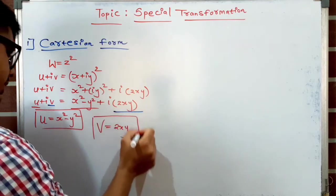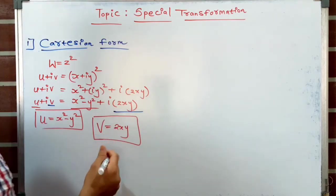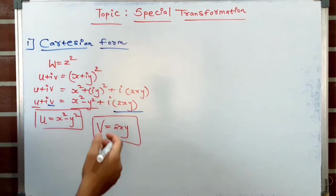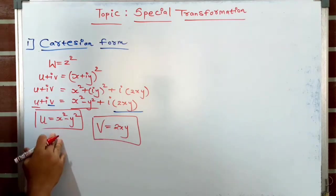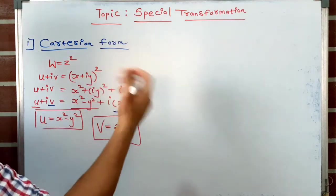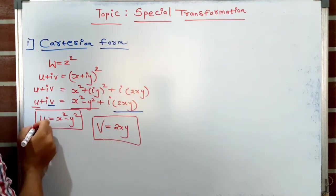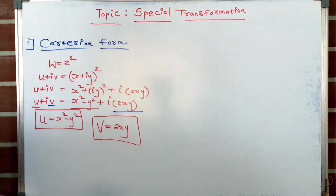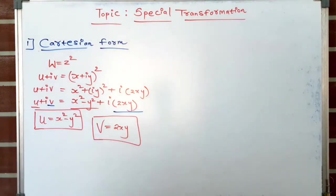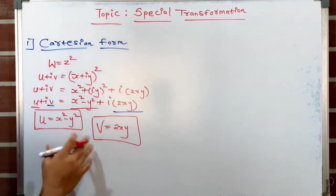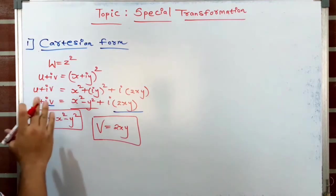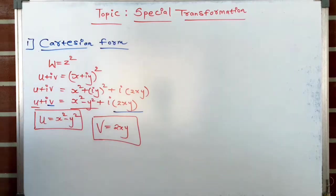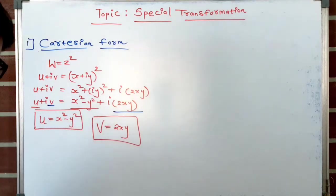This step — deriving u and v by separating real and imaginary parts — is important and must be done in every question related to the w = z² transformation. This step is known as separating the real and imaginary parts.